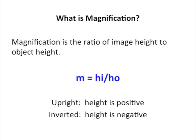In this screencast, we're going to talk about magnification, specifically for converging lenses. What is magnification? The definition of magnification is the ratio of image height to object height. Written as an equation, we have M equals HI over HO, where HI is the image height and HO is the object height. A height is positive if the object or image is upright, and height is negative if the object or image is inverted.